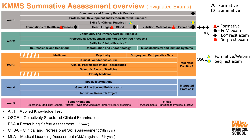If any student needs a reset because they were unsuccessful at the end of a module, those reset opportunities are available at the end of the academic year. Year two has a very similar structure, with an AKT at the end of the Primary Care in Practice GP module.